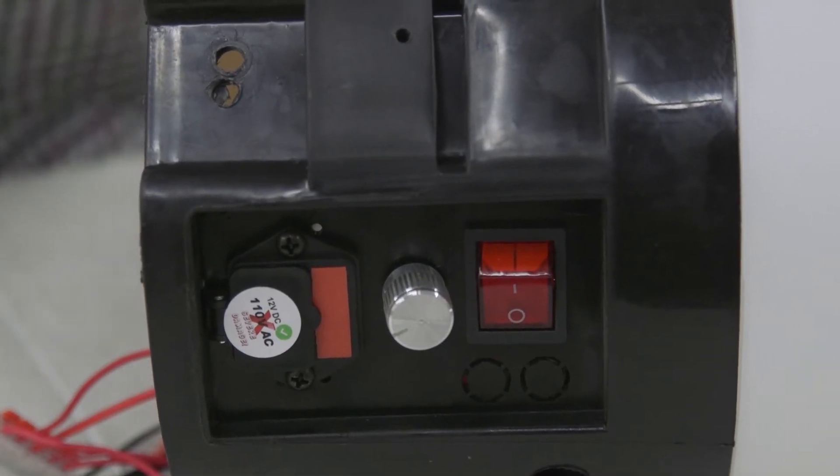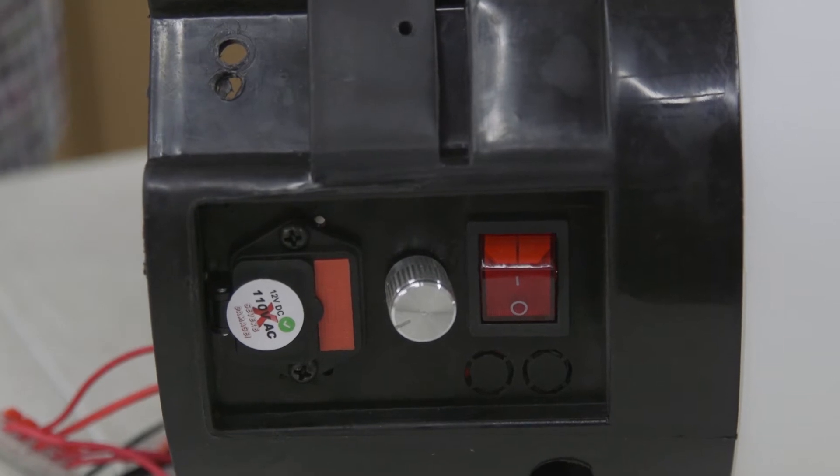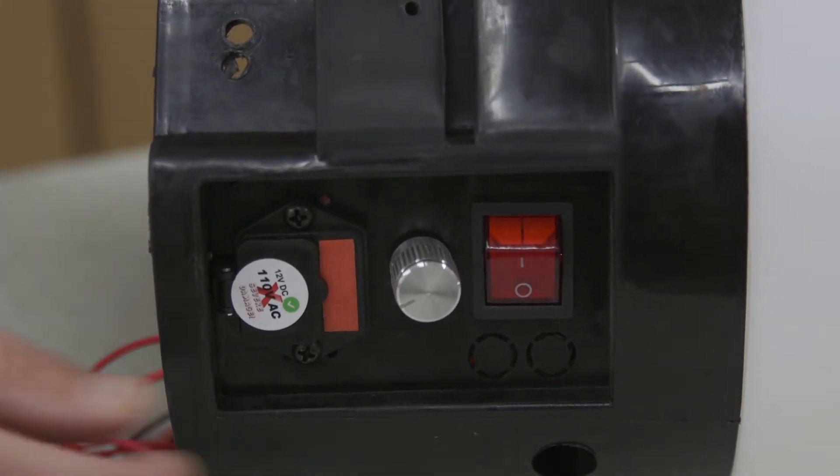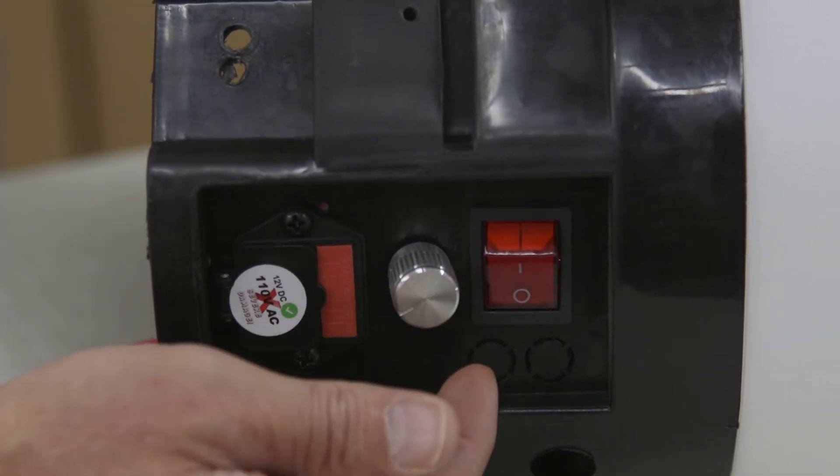The last potential cause for no power with no voltmeter lights is that the rotary switch is no longer functioning correctly.